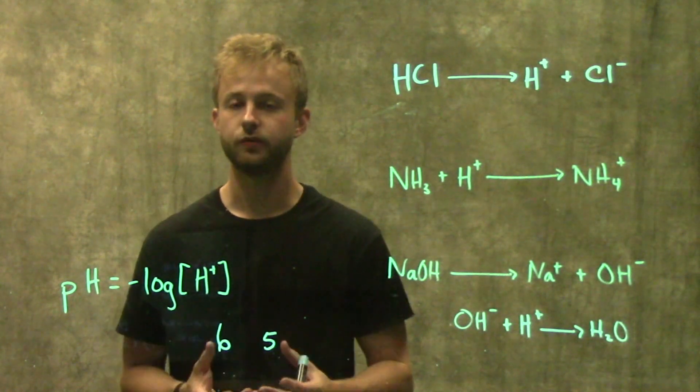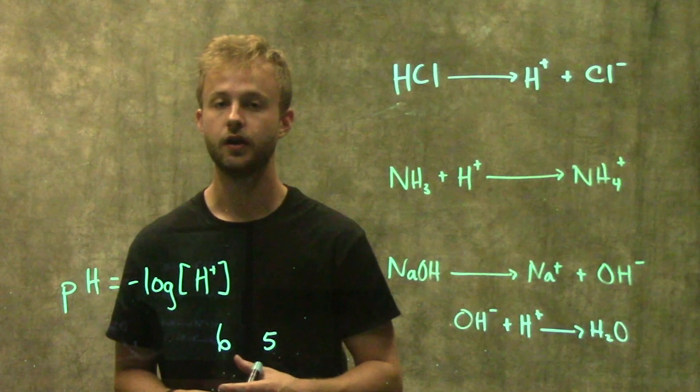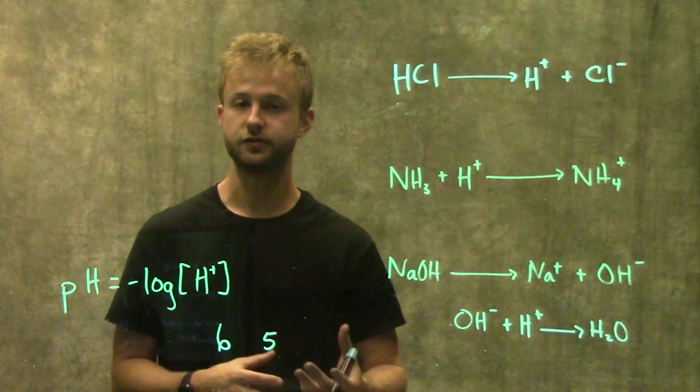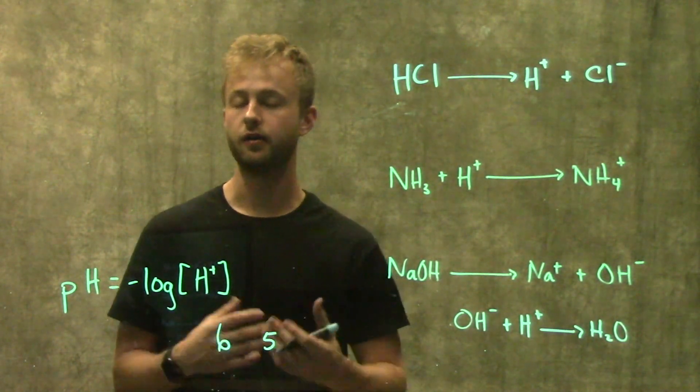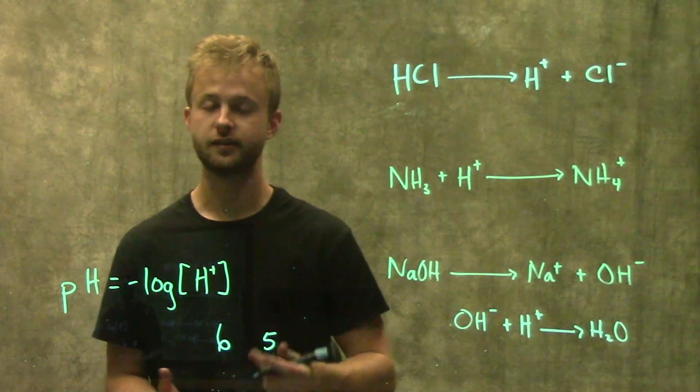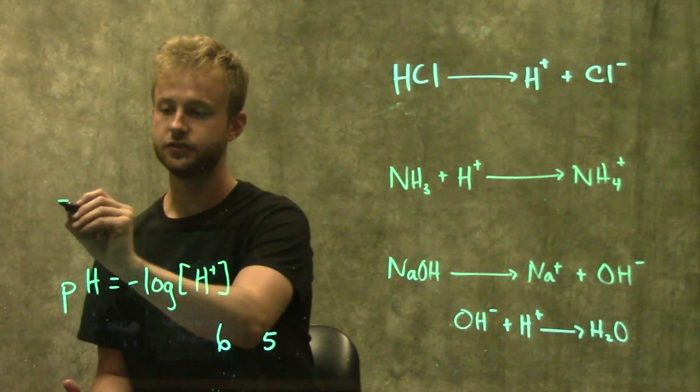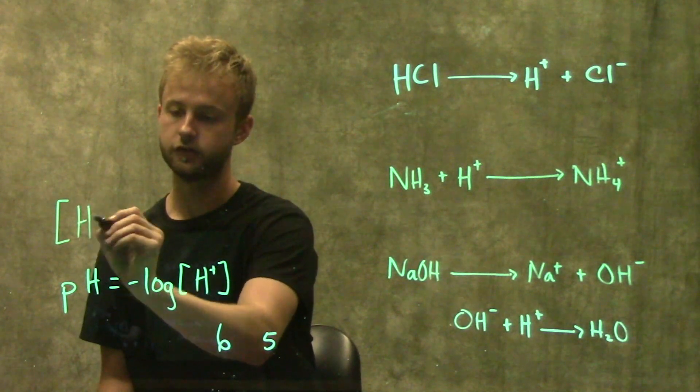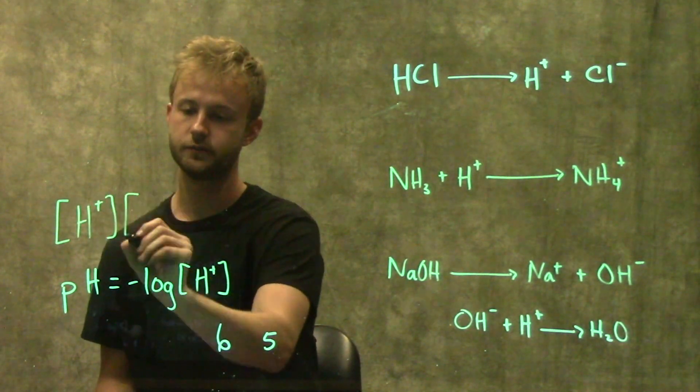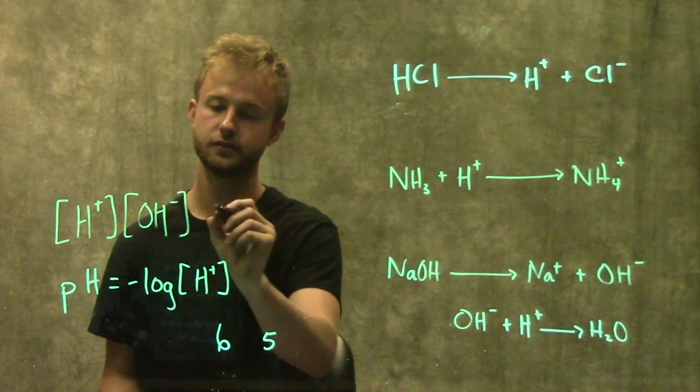There are two important relationships that we can remember for aqueous solutions, which are solutions where the solvent is water when they're at 25 degrees Celsius, that can help us figure out what the pH would be.